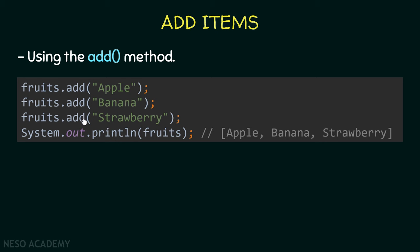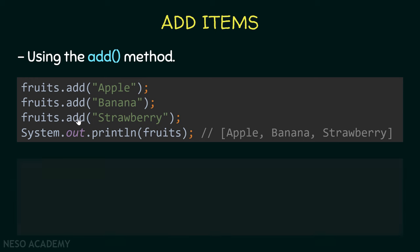When we use the add() method, elements are automatically added to the end of the ArrayList. Initially the ArrayList was empty, so 'apple' was the first element, then 'banana' was added after it, then 'strawberry' was added last. So by default, the add() method appends the element to the end of the ArrayList.